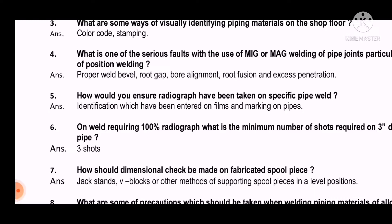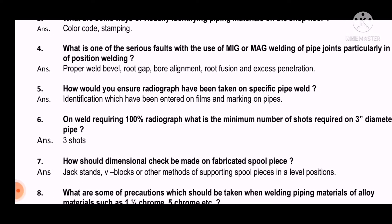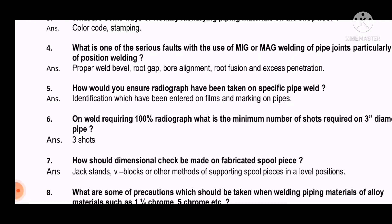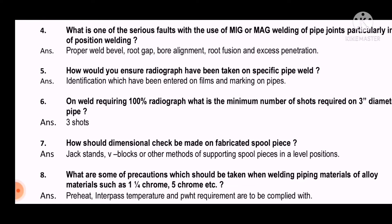Question 6: On welds requiring 100% radiograph, what is the minimum number of shots required on a three-inch diameter pipe? The answer is three shots.